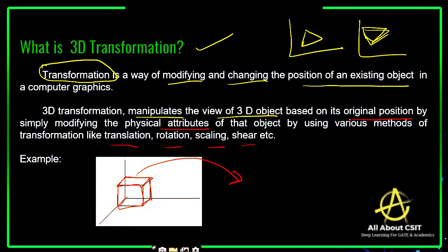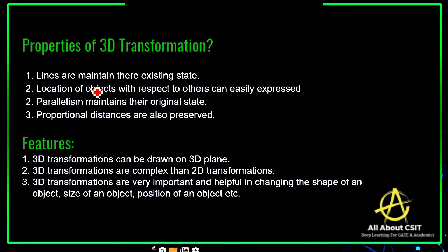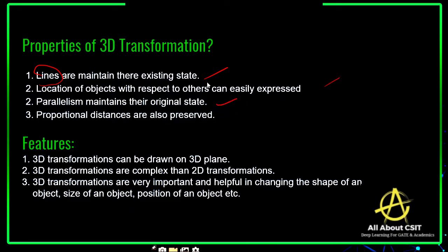Now let's see the properties of 3D transformation. The lines are maintained in their existing state — whatever lines are there, they are preserved. The location of the object with respect to others can be easily expressed. Parallelism maintains its original state and is also preserved. Proportional distances are also preserved. So lines, location, parallelism, and proportional distances are all preserved.